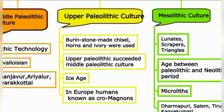The Upper Palaeolithic culture used burin — a stone-made chisel with a sharp cutting edge — along with horns and ivory. Upper Palaeolithic succeeded Middle Palaeolithic culture. During this period, the Ice Age covered large parts of the world with ice sheets and snow. Humans of this period in Europe are known as Cro-Magnons.